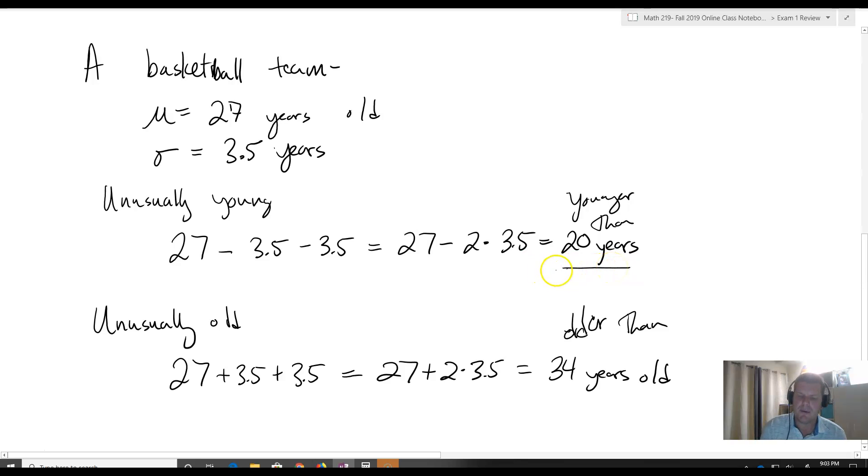These values that we found here are like the cutoffs. How we found the cutoffs: we subtracted two standard deviations to get unusually young, and to get unusually old, we added two standard deviations.